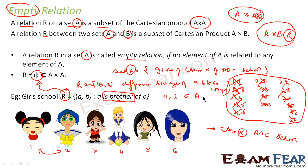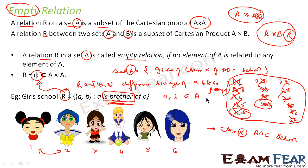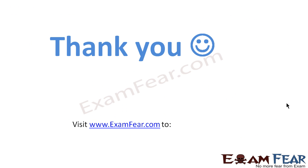Had there been even a single match, this would not be an empty relation. For example, if I say the difference between age of A and B is 1 year instead of 100 years, there is a possibility we may find a pair where the difference is 1 year. In that case the relation would not be empty because at least one pair fits the criteria. If not even a single pair fits, then it is an empty relation.